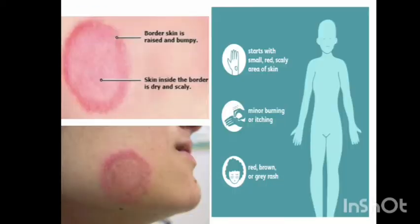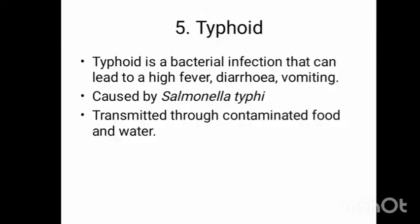We have another fungal disease called ringworm. The name itself tells you there is a ring-like patch on the body caused by a fungus. Symptoms include a small red or scaly area on the skin, minor burning or itching, and it becomes a red, brown, or gray rash. So those two were the fungal diseases: athlete's foot and ringworm. We also saw two viral diseases: flu and dengue.